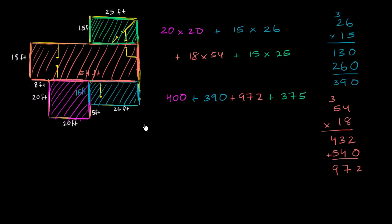And now let's add up these numbers. So we have 375 plus 972 plus 390 plus 400. And so this gets us to 5. And this is a home stretch. We deserve a drum roll now. 5 plus 2 is 7. 7 plus 7 is 14, plus 9 is 23. 2 plus 3 is 5, plus 9 is 14. So the square footage of this house, 2,137 square feet.